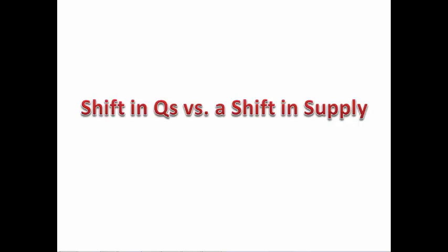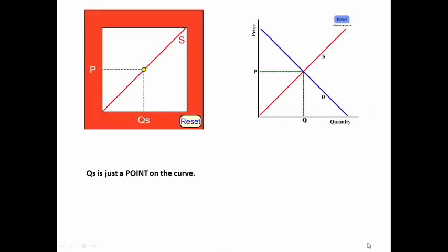Shift in quantity supplied versus a shift in supply. Quantity supplied is just a point on the curve. Supply, though, is the entire curve. So the entire curve is supply and quantity supplied is just a point on the curve.